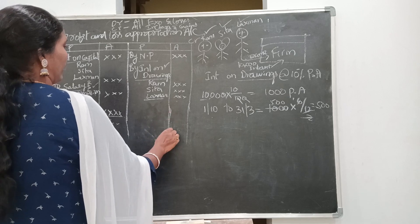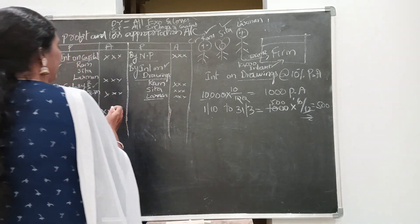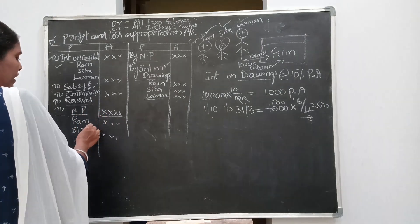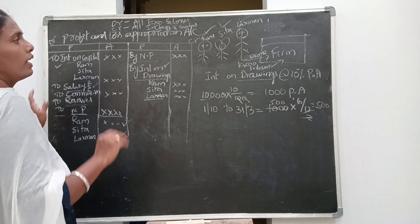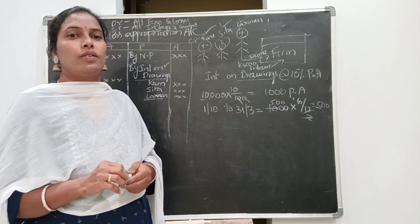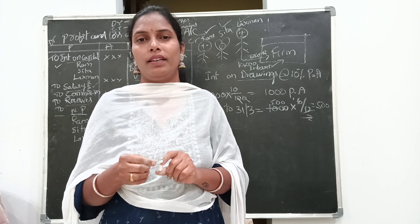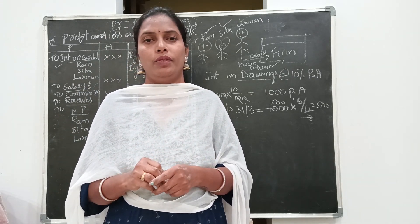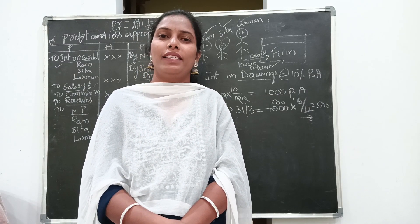After posting all entries, from the credit side total we deduct the debit side total — incomes minus expenditure — to get the net profit, which we need to distribute among the partners. In our next class, we will solve two problems on the profit and loss appropriation account so that the concept becomes completely clear. Thank you for watching my video. Subscribe to my channel for more videos.